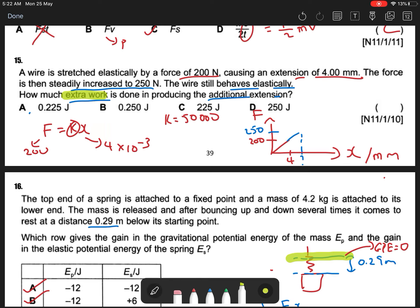So I know that in this case, I want to be 50,000. I want to know what is my additional extension. Additional extension, it means 250 F is equal to kx. So 250, I know that spring constant is 50,000, right?